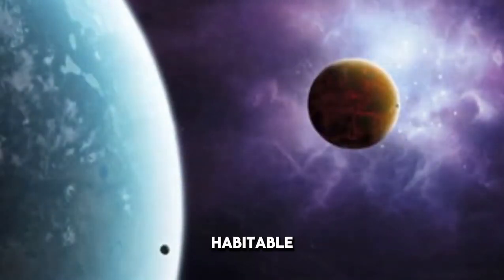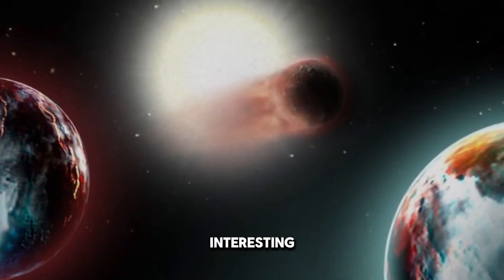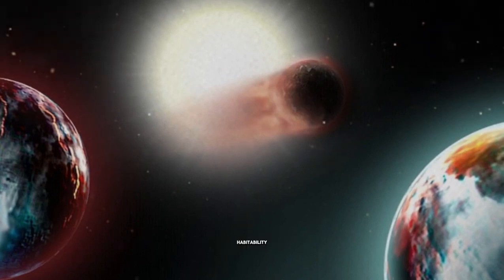In the Kepler-62 system, there are two planets in the habitable zone, Kepler-62e and Kepler-62f. These planets might be water-rich and have features that make them interesting for potential habitability. Kepler-62 could potentially have a warm, humid climate, and a large moon might further boost its habitability.